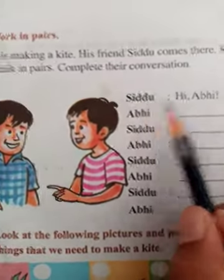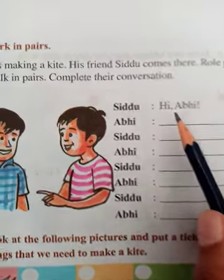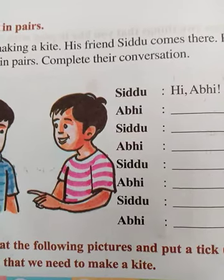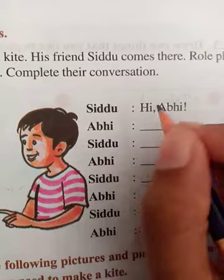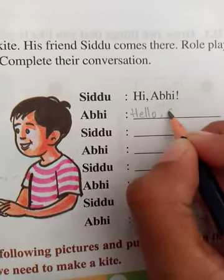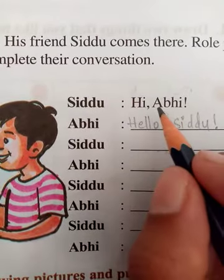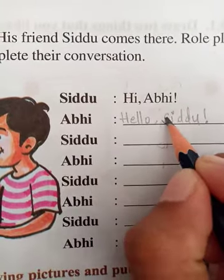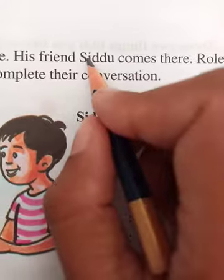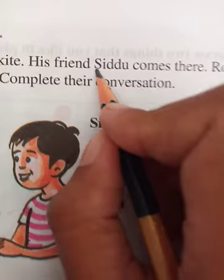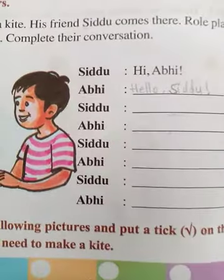Sidhu comes while Abhi is making a kite and says 'Hi Abhi.' If someone says hi, you reply the same — hello or hi. So Abhi answers: 'Hello Sidhu.' Remember, if you write a name anywhere in a sentence, the first letter should be a capital letter. Sidhu — S is capital; Abhi — A is capital, even when the name appears in the middle of a sentence.